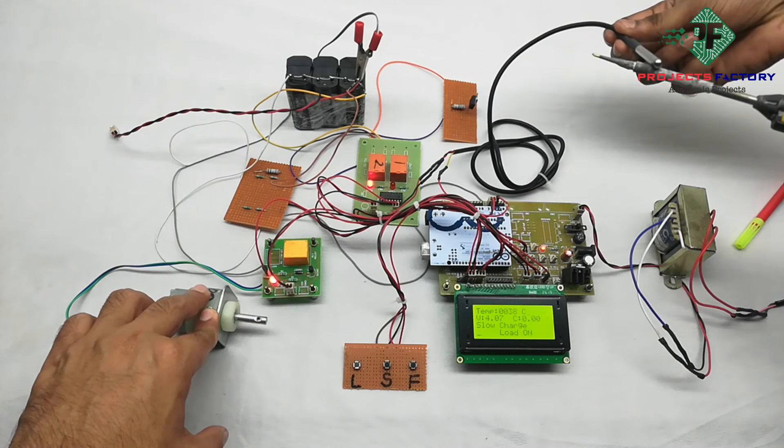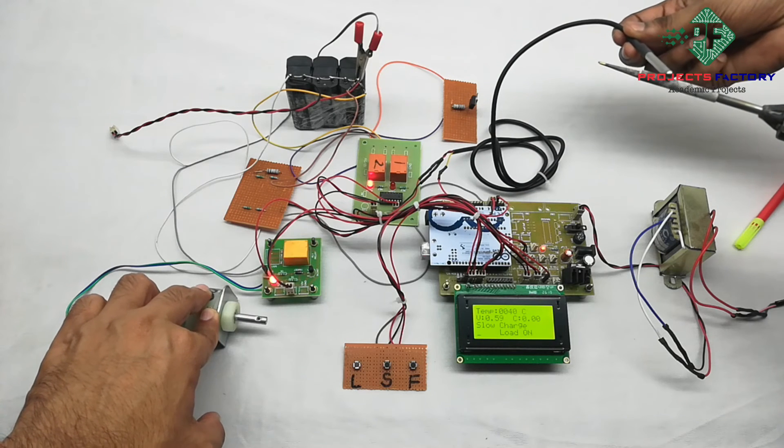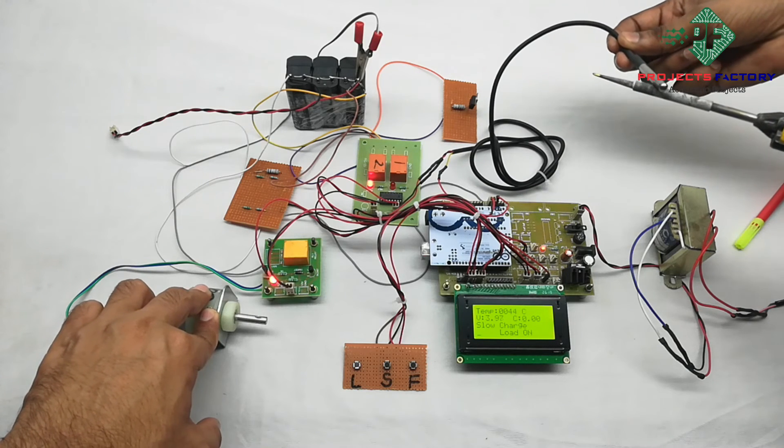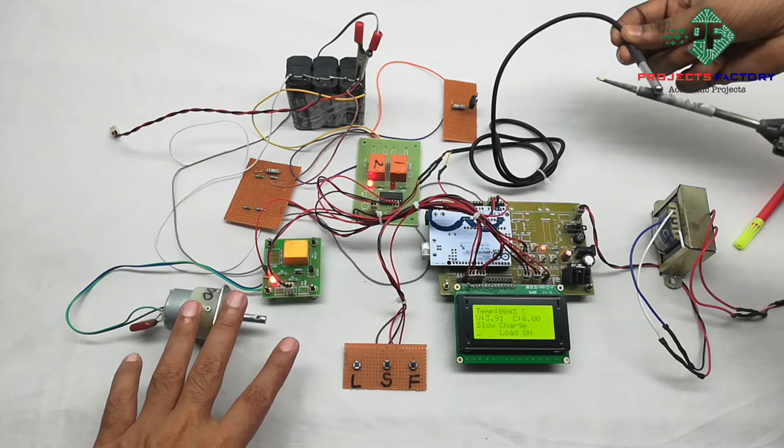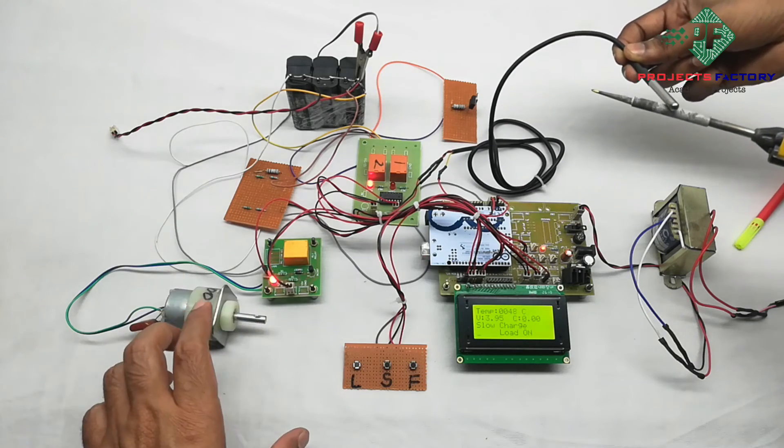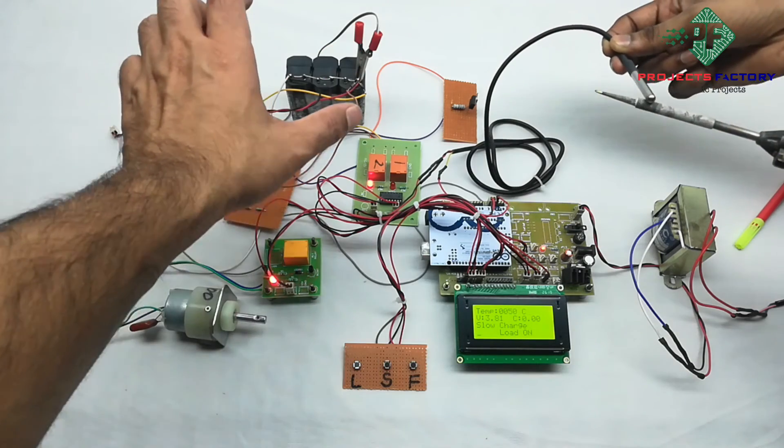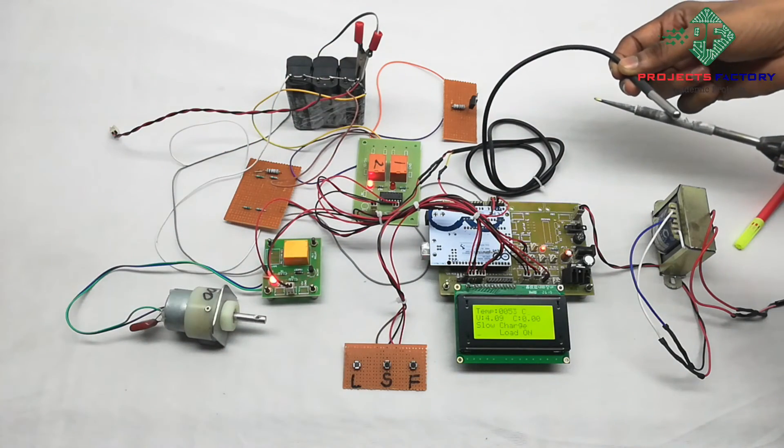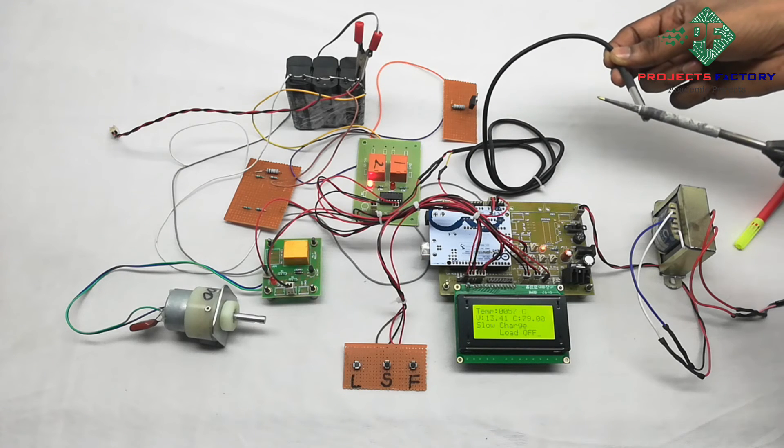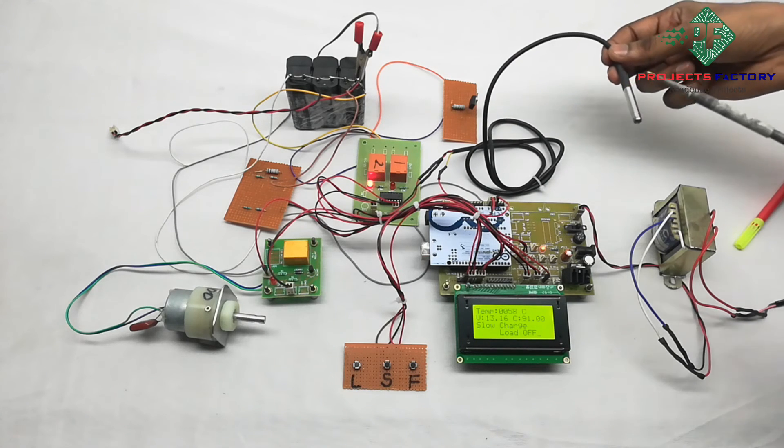Here the cutoff temperature is 55 degrees. If it crosses more than 55, then load will be off. If load will be off, then there is no load on battery, then the burning conditions or explosions, the chances of explosion will be decreased.